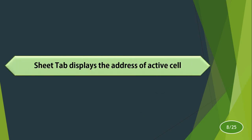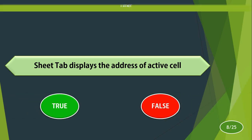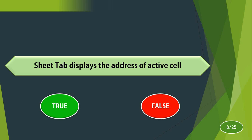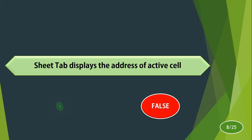Sheet tab displays the address of the active cell. True or false? The answer is false. Sheet tab is used for moving from one sheet to another sheet, whereas the name box displays the address of the active cell. So the answer is false.